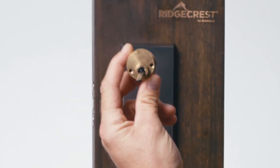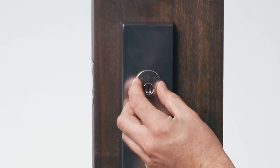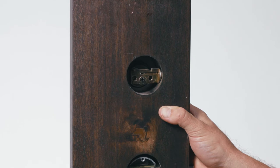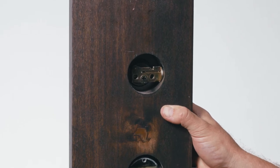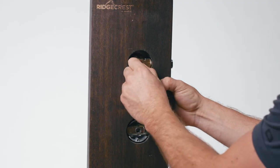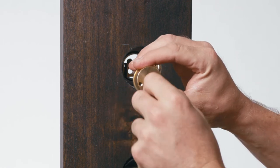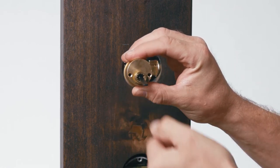Install the cylinder carefully, ensuring the tailpiece on the deadbolt cylinder is installed horizontally into the crosshairs of the deadbolt latch. Grab the tailpiece with your fingers or pliers and turn to extend the bolt. If the tailpiece does not extend the bolt, remove the deadbolt cylinder, turn the tailpiece 180 degrees and reinsert.